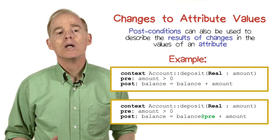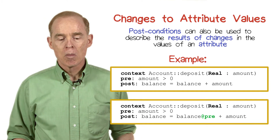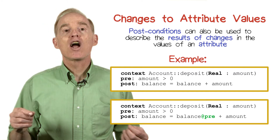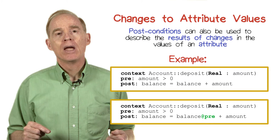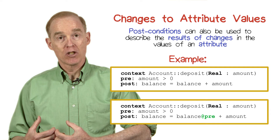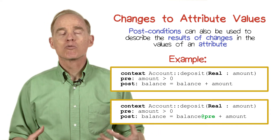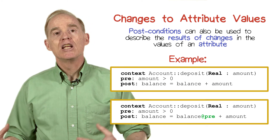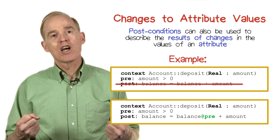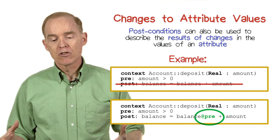Fortunately, OCL has a mechanism for allowing us to express these sorts of situations where we're changing values. That particular mechanism consists of an at-sign followed by the word 'pre', and what that denotes is the value before the operation executed. If we don't use @pre, then what we're seeing when we express balance or anything like that is the value afterwards. So we can express the postcondition correctly by saying that balance equals balance@pre plus amount.